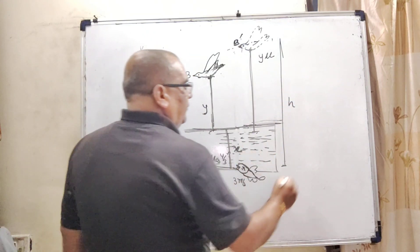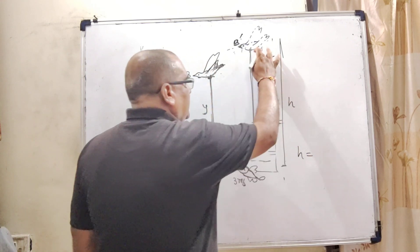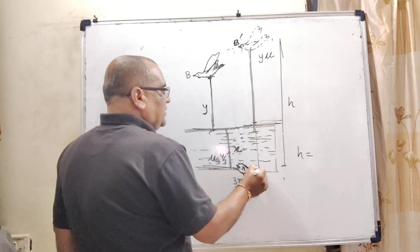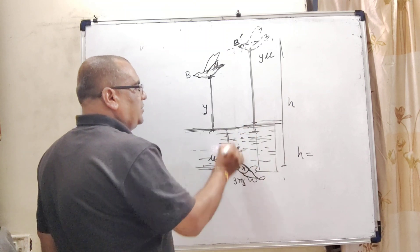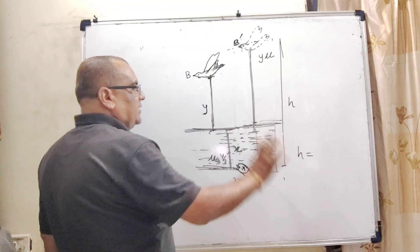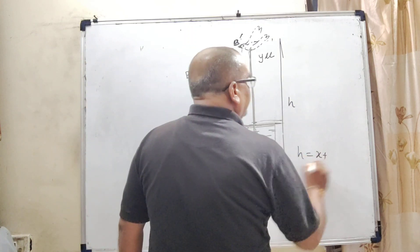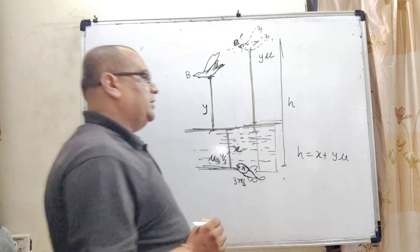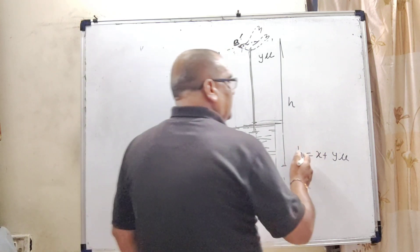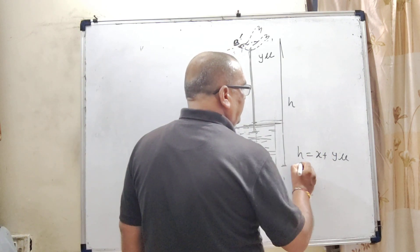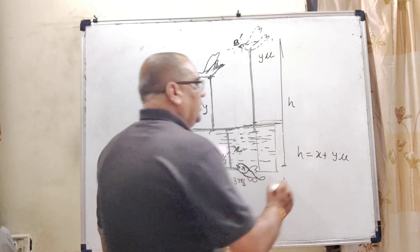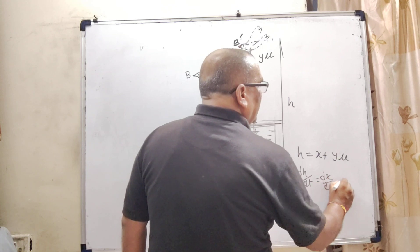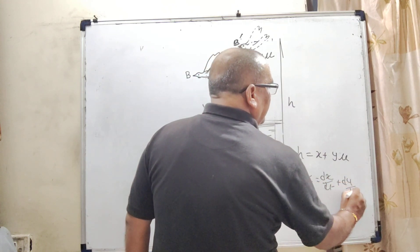And so, therefore, this h is equal to, this total h is equal to, this in two parts, this part and this part. Here, this part from the fish to the surface of the level, that is considered x. So, here, x plus y/mu. Differentiate both the sides because all these are distances converging to velocity. We have required differentiation. So, dh/dt, dx/dt, dy/dt and mu.